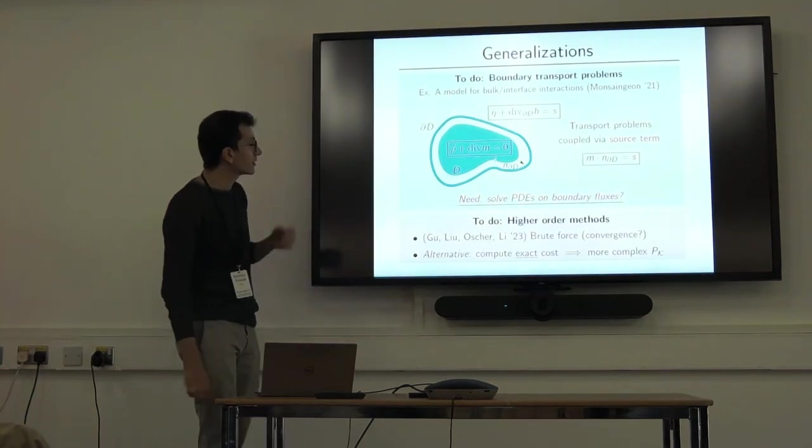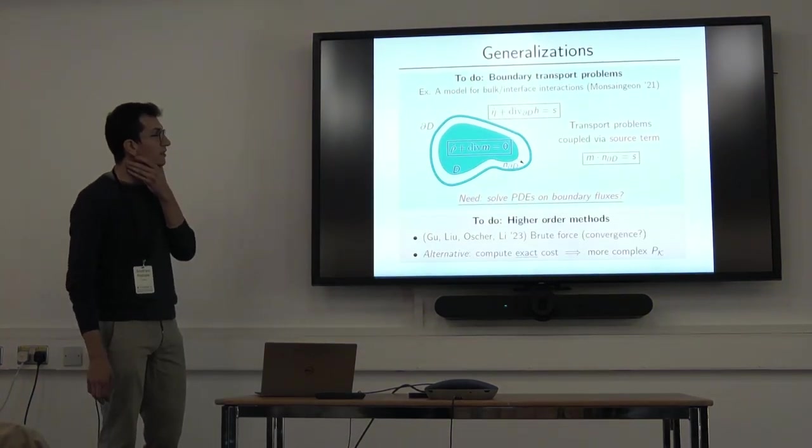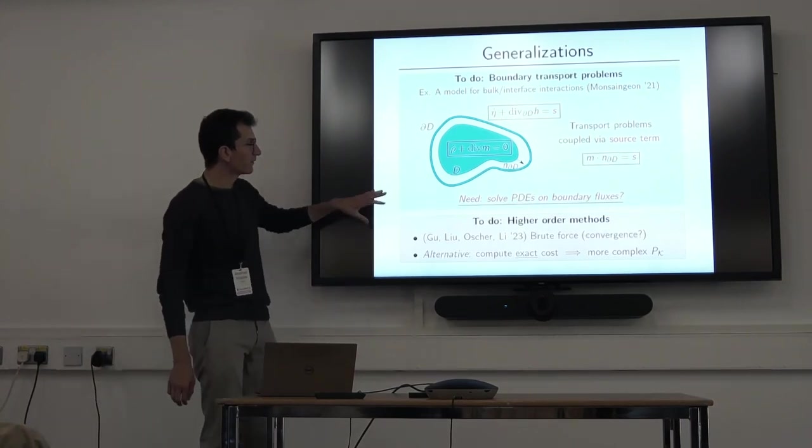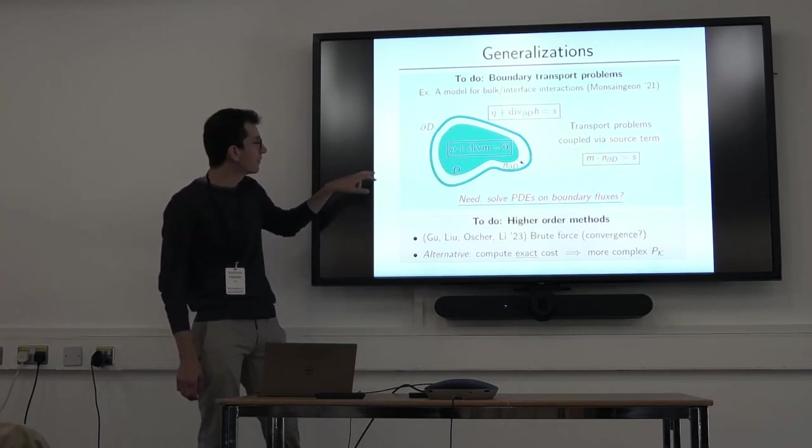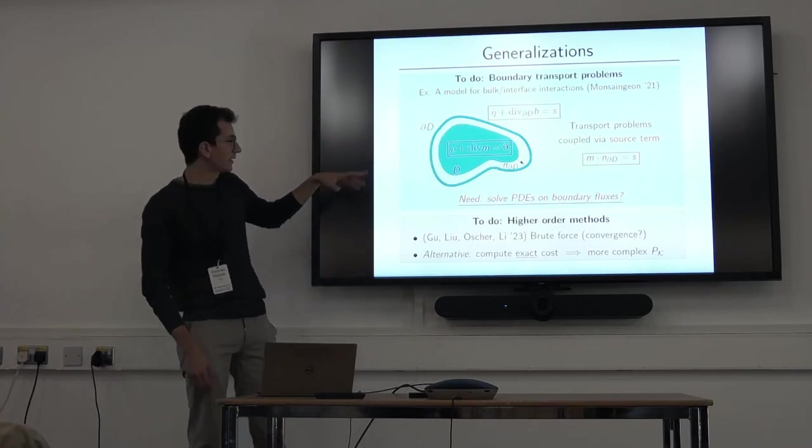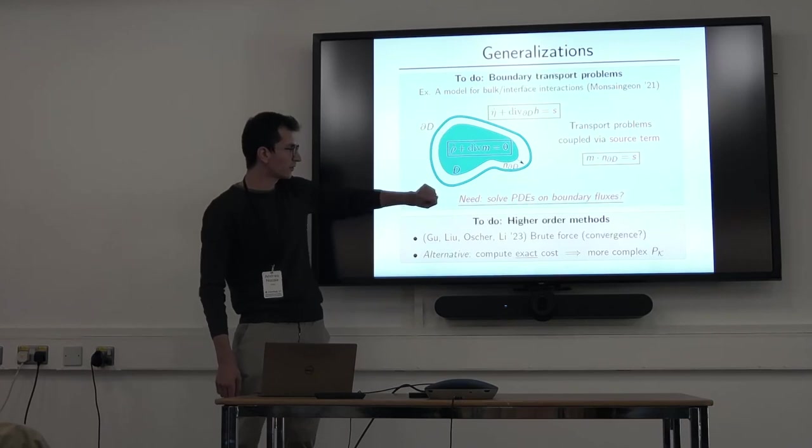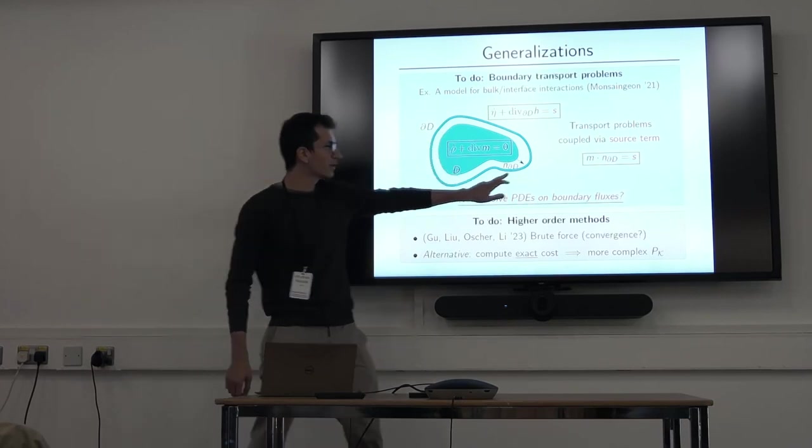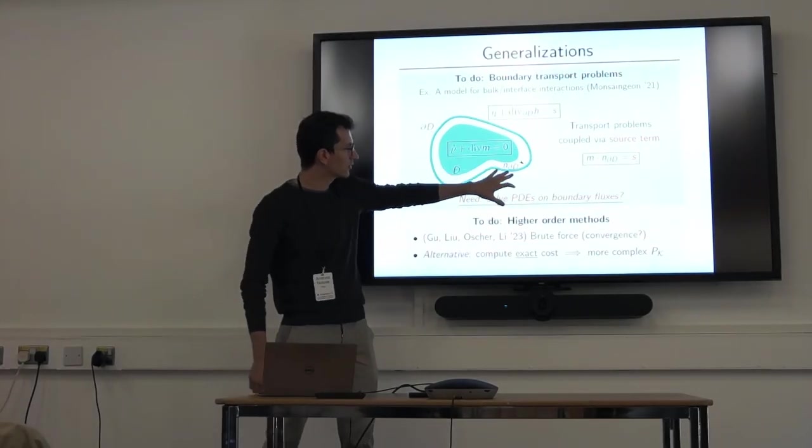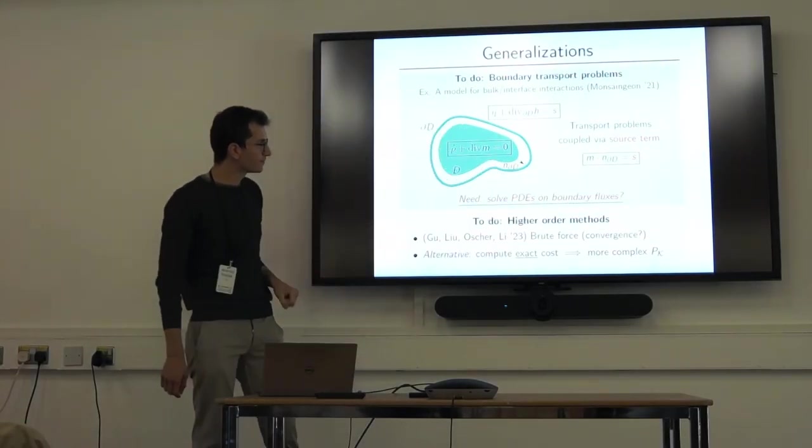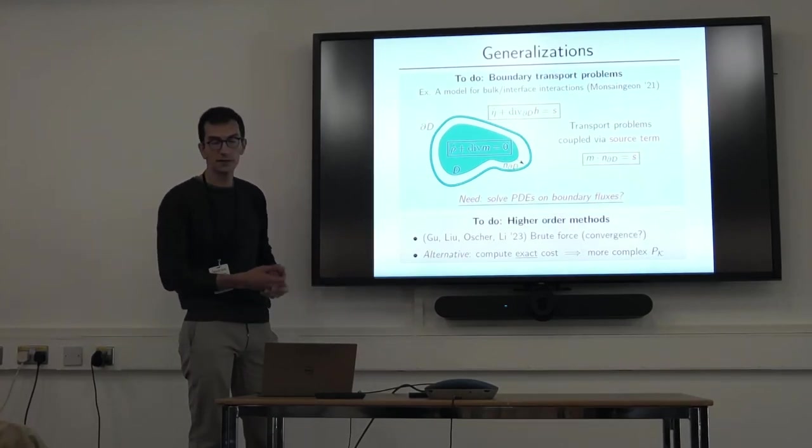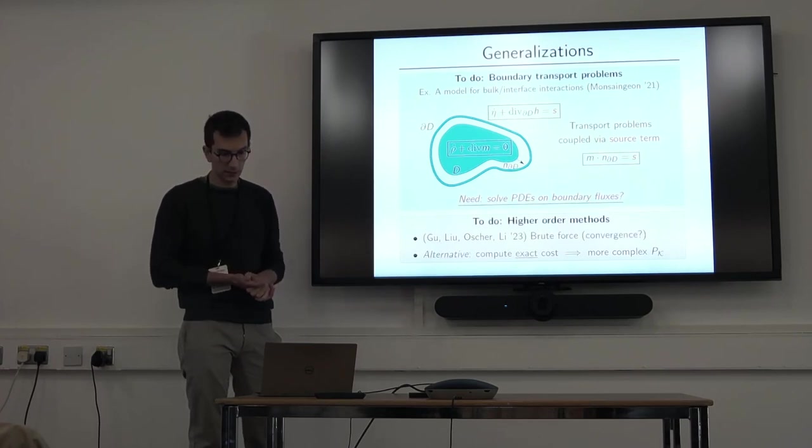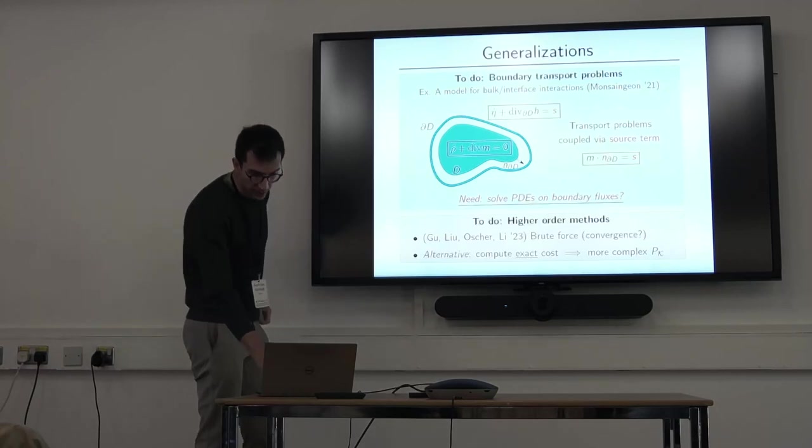There is a class of problems that I was interested in also that come from a work of Lenara Montsaint-Jean, who's in Lisbon. And these are models where you have a bulk where the same thing that I described before happens, but also you have a density that's concentrated on the boundary. And they both solve the same sort of optimal transport problem, but they are coupled by the fact that what goes out of the bulk goes into the interface. And so then this is somehow penalized by the cost function. So, in practice, what do you need to do? In the same setting, you need to solve some PDEs on the boundary of your tensor products domain.